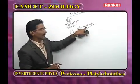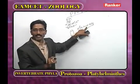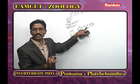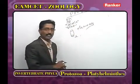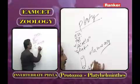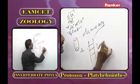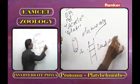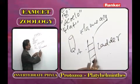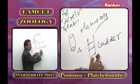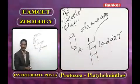The main function of flame cells is osmoregulation and secondary function is excretion. The nervous system in Platyhelminthes is ladder-like — longitudinal nerve cords connected by transverse nerve cords.